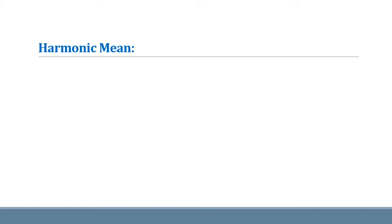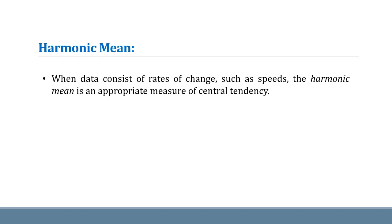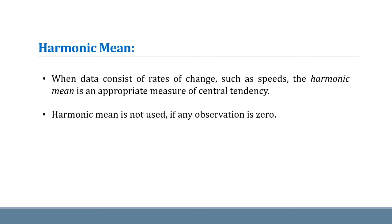Basically, harmonic mean is a measure of central tendency. When data consists of rates of change such as speed, the harmonic mean is an appropriate measure of central tendency. Harmonic mean is not used if any observation is given as 0.